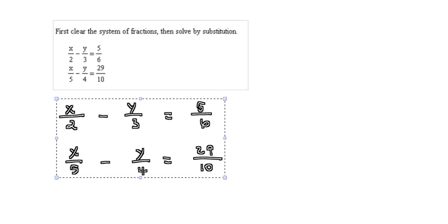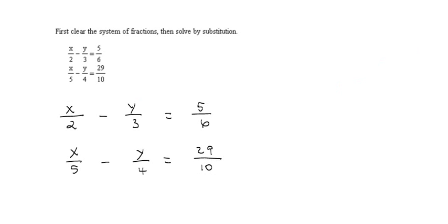So we get rid of those fractions by multiplying everything on both sides by the least common denominator for each equation. So we start with this one. You have a 2, a 3, and a 6. So the least common denominator, the LCD, is 6. So we're going to multiply everything on the left by 6, and then the only thing on the right by 6.